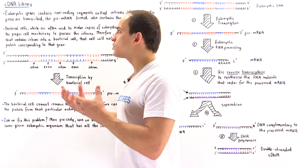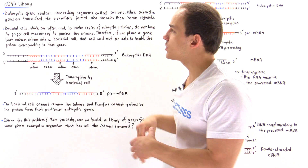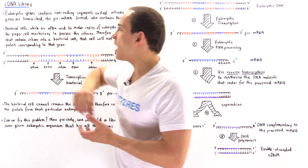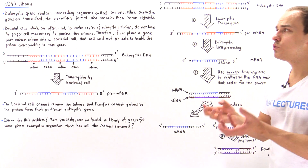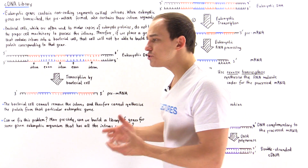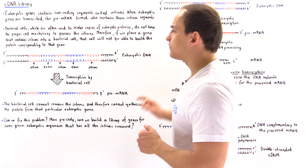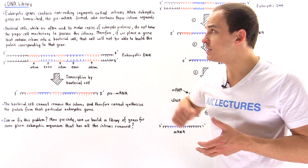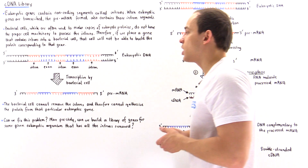This is called building a complementary DNA library. A cDNA library is a library that consists of eukaryotic genes in which we have removed all the different introns. To see how we can build a cDNA library, let's look at the following five steps.